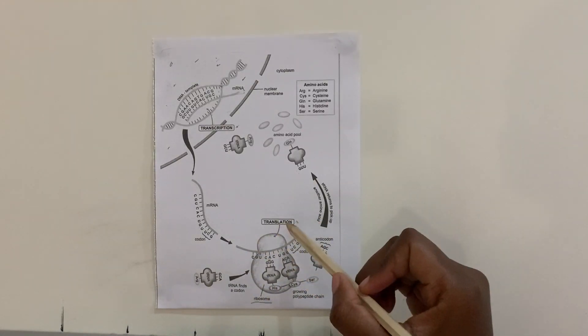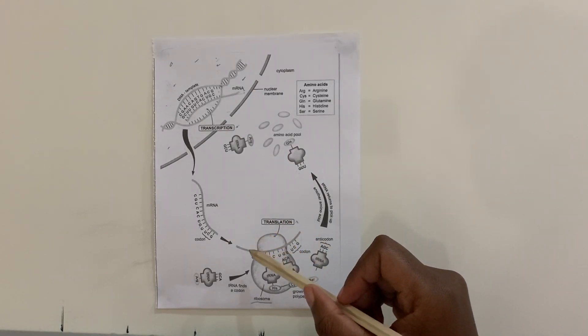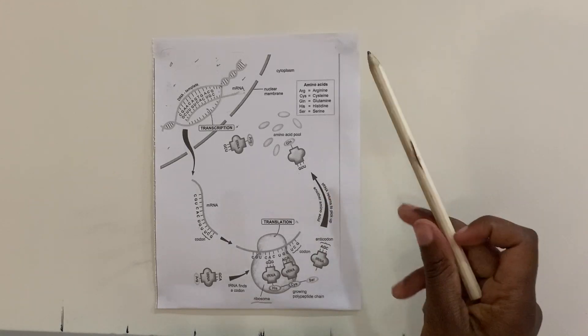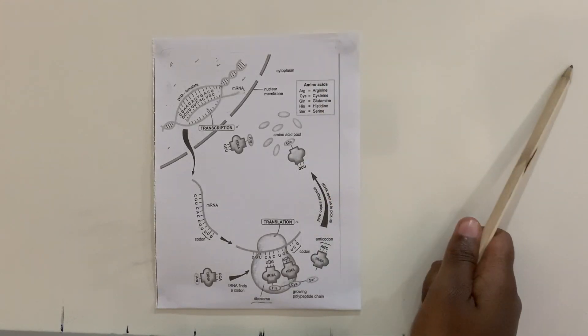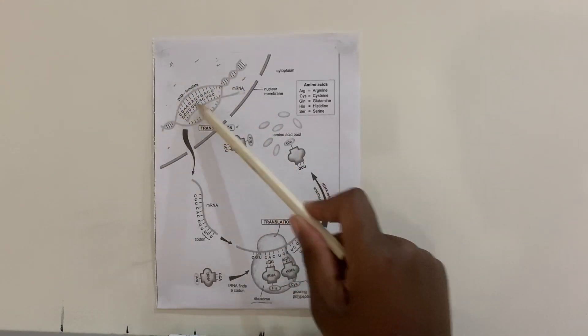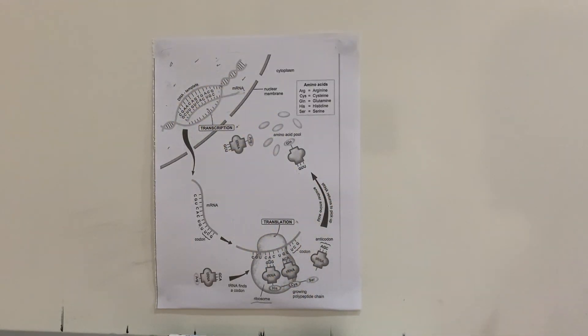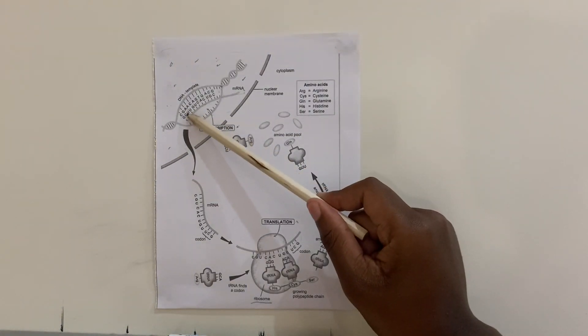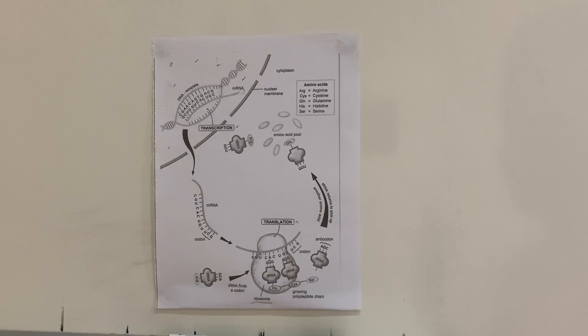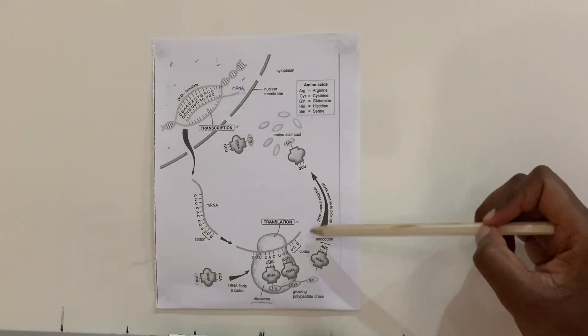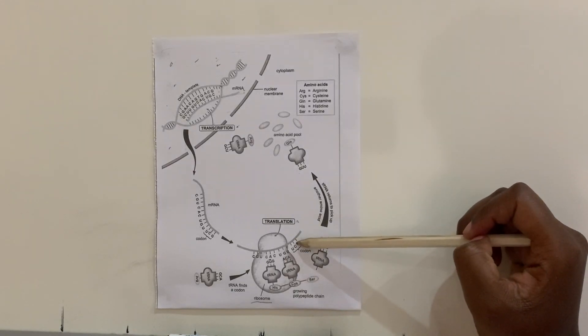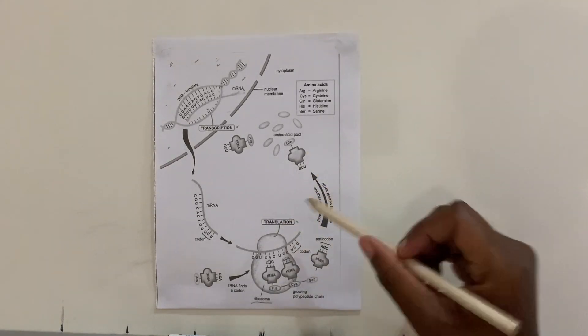And here is where translation is going to happen. So mRNA, just in case you didn't know, stands for messenger RNA. It basically carries the message from the DNA of how the protein should be formed because of those complementary nitrogenous bases. So the mRNA attaches itself to the ribosome, and then three of these nitrogenous bases are called a codon.